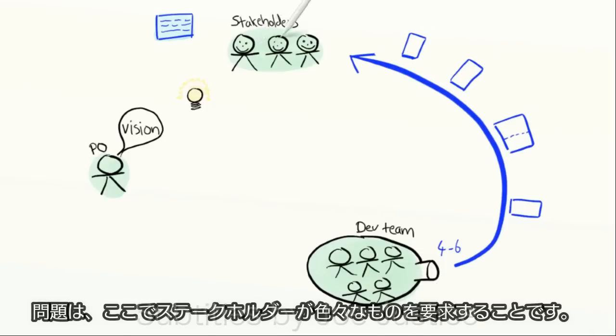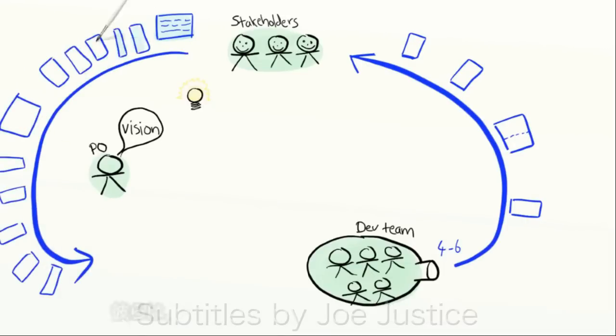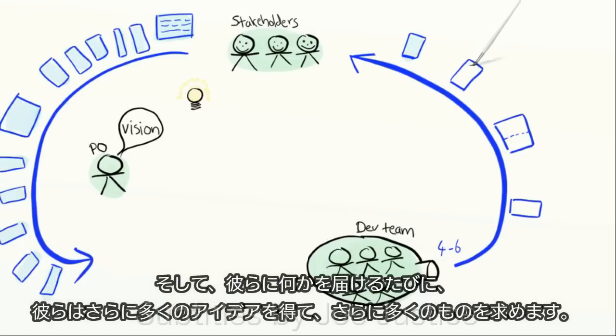The problem is, here are a bunch of stakeholders asking for all kinds of stuff, and they sure aren't going to be limited to four to six ideas per week. They have lots of ideas and wishes, and every time we deliver something to them, they'll get even more ideas and ask for even more stuff.